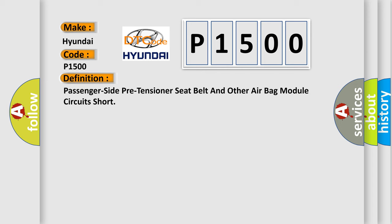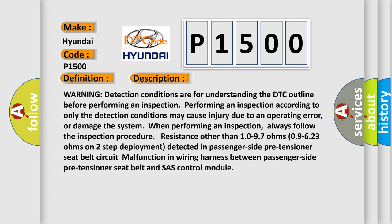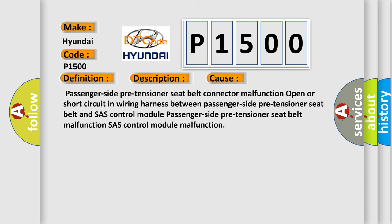Here is a short description of this DTC code. Warning detection conditions are for understanding the DTC outline before performing an inspection. Performing an inspection according to only the detection conditions may cause injury due to an operating error, or damage the system. Always follow the inspection procedure: resistance other than 10 to 97 ohms, or 0.623 ohms on two-step deployment, detected in passenger side pre-tensioner seat belt circuit — malfunction in wiring harness between passenger side pre-tensioner seat belt and SRS airbag control module. This diagnostic error occurs most often due to a passenger side pre-tensioner seat belt connector malfunction, or an open or short circuit in the wiring harness between the passenger side pre-tensioner seat belt and the SRS airbag control module.